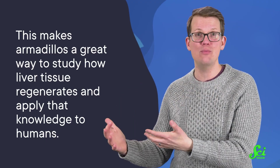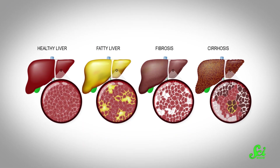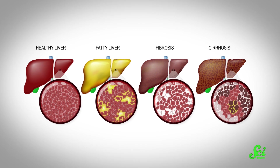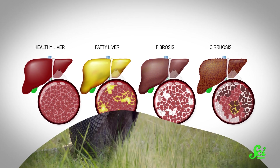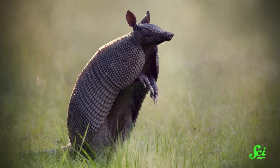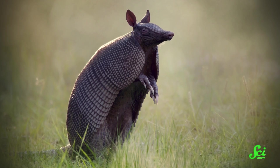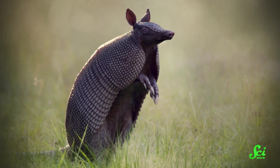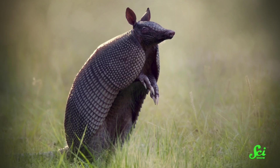The researchers in the study think this makes armadillos a great way to study how liver tissue regenerates and apply that knowledge to humans. Liver disease causes millions of deaths around the world every year. The human liver is typically able to heal itself when needed, but that can be impaired in cases like liver failure or cirrhosis. The researchers are hopeful that using armadillos as a model of liver regeneration could help develop tools to heal damaged livers in humans, or maybe even grow brand new livers to order when a transplant is needed. Which is a pretty unexpected upside to one of the most hated diseases in human history interacting with one of my favorite little animals. Sometimes, nature creates silver linings in the oddest of places.